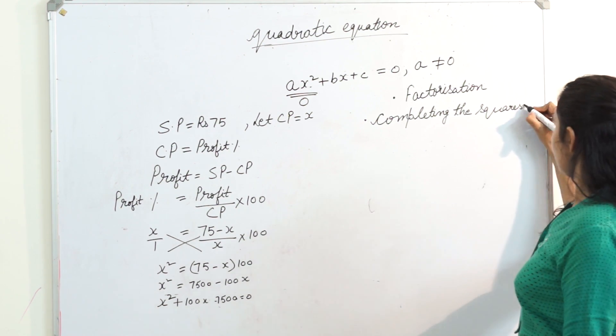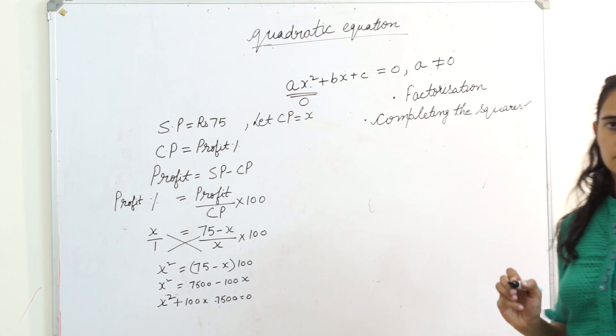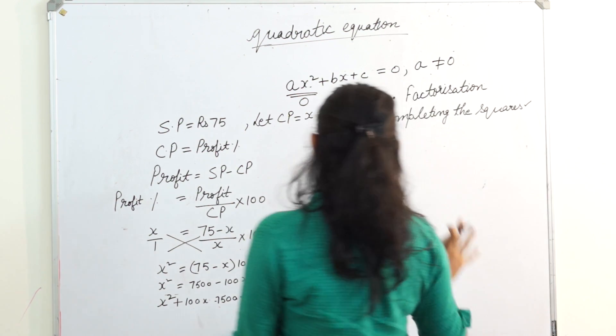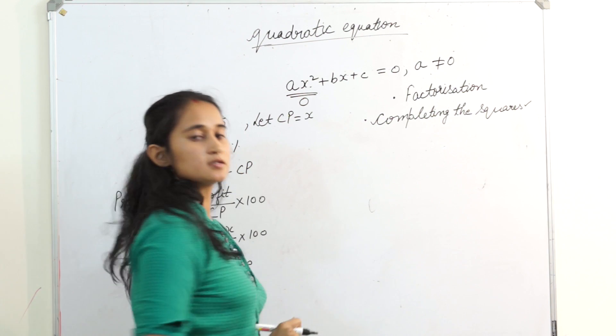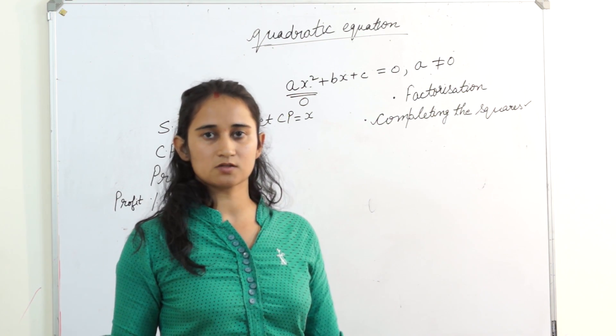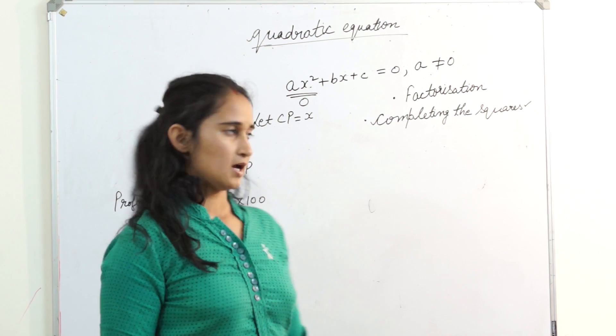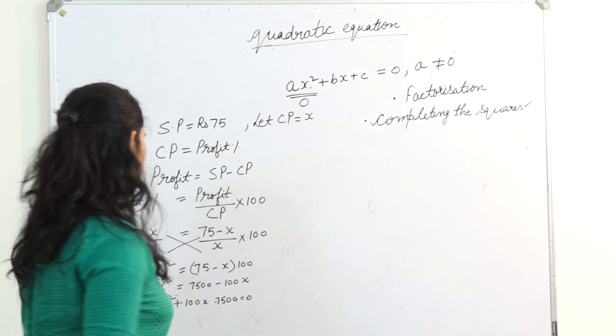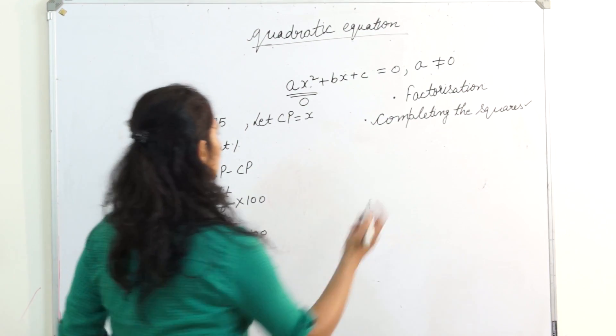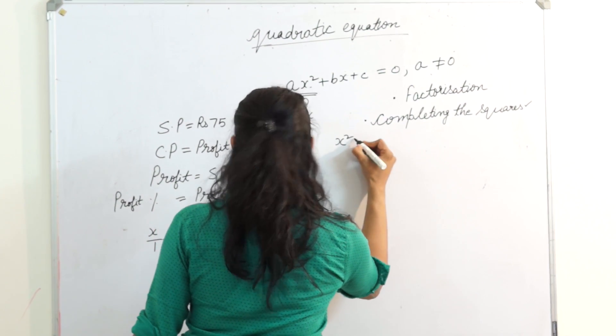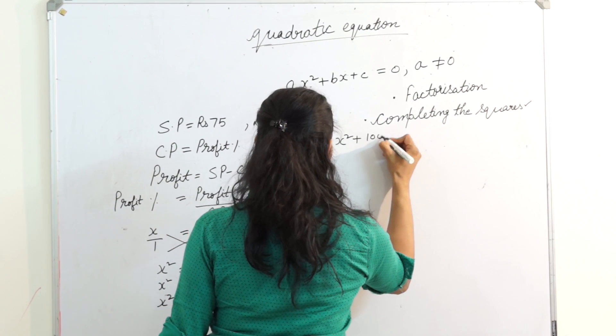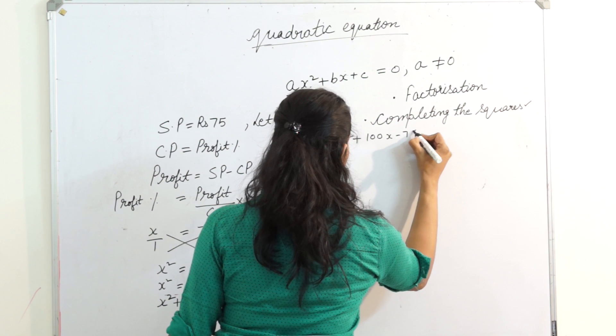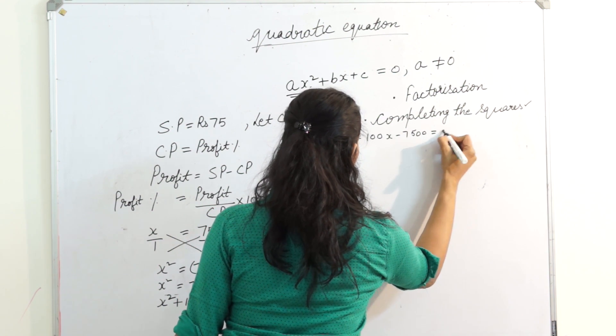So I have two methods to solve the equation. I will start with completing the squares. In this, we have two kinds of formulas: x plus a whole square, x minus a whole square. I hope you know that very well. So let's start. I write this equation over here: x square plus 100x minus 7500 equals 0.